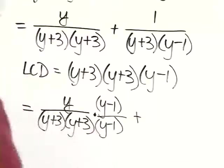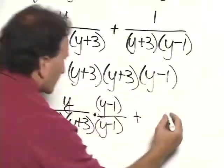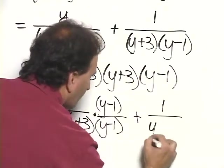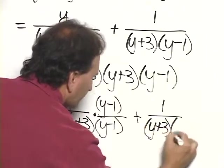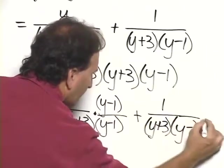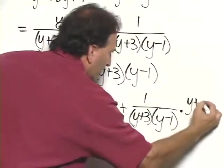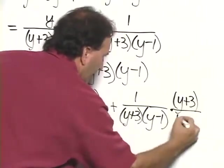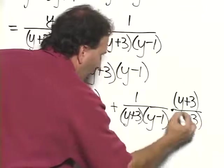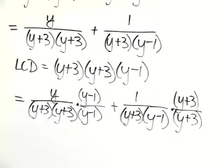Plus, when we take this rational expression, 1 over y plus 3 times y minus 1, we would have to multiply numerator and denominator by y plus 3. So,